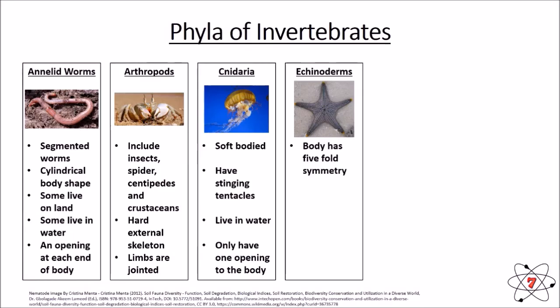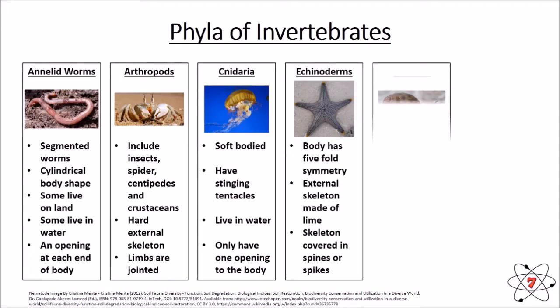Echinoderms are another phyla. They have five-fold symmetry, meaning there are five planes of symmetry in their body — a starfish is a classic example of that. Echinoderms have an external skeleton made up of lime, which is the chemical calcium carbonate, and their skeletons are generally covered with spines or spikes.